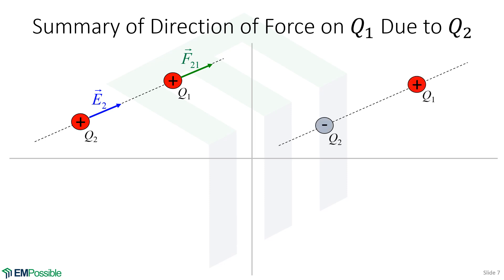In the second case, we're making the second charge negative. A negative charge has the electric field converging to it, so the electric field is now pointed to the lower left. The first charge is positive and the force is always in the same direction as the electric field, so the force is also in the lower left direction.